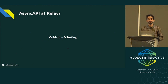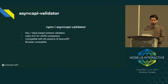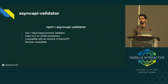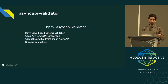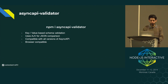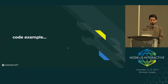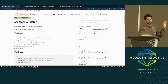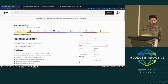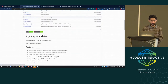Now it comes to how to validate and test if a message is right or not, or what property it is missing. We wrote this library — it's open source — called Async API Validator. It's a key-value-based schema validation: you give it the key of your message, pass the payload, and it validates according to the schema definition you have defined. It uses the AJV module for JSON comparison, and it's also browser compatible. The project is already on NPM and we use it widely in our services.